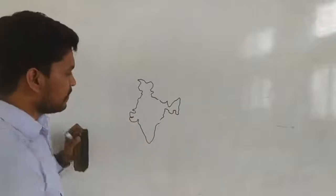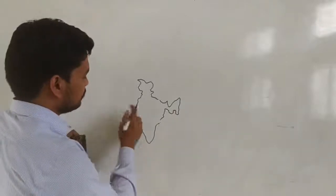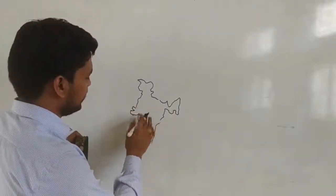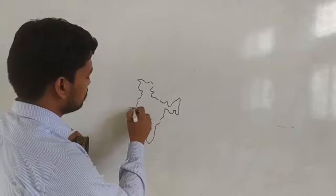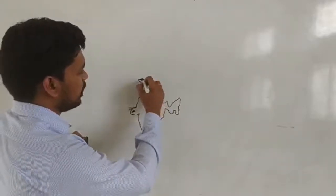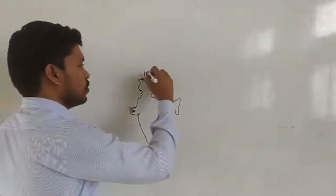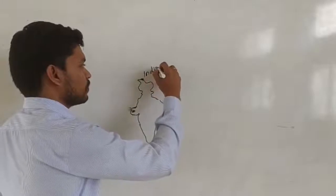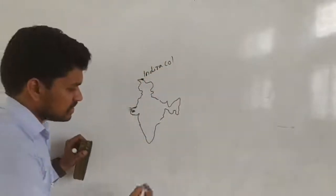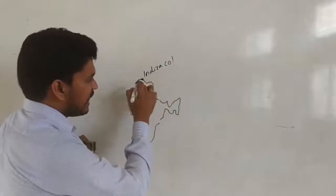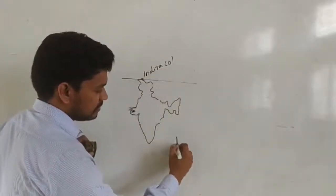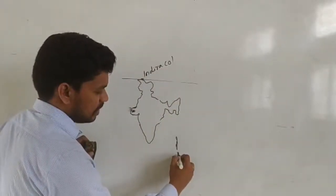Suppose this is India. The Indian landmass — where the Indian landmass starts at this point — that starting point is called the Indian landmass's southern tip. It is called the Indian landmass's southernmost point — the southernmost point of the Indian landmass which ends at the southern tip.